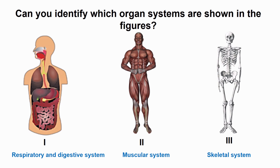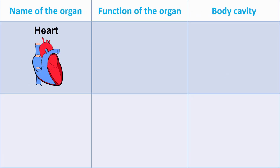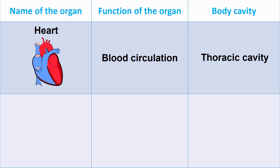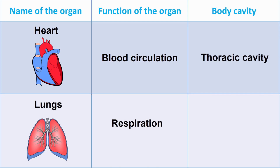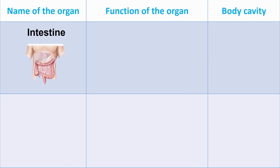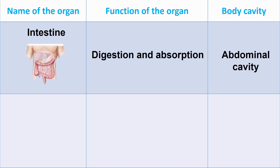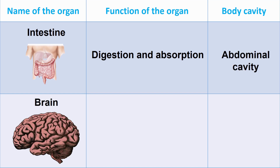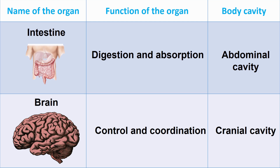With the help of that, can you complete the following table? The function of the heart is blood circulation, and it is located in the thoracic cavity. The function of the lungs is respiration, also located in the thoracic cavity. The function of the intestine is digestion and absorption of food, located in the abdominal cavity. The function of the brain is to control and coordinate the body, and it is located in the cranial cavity. As we have seen, various organs are safe within the body cavity. Hence, the human skeleton is a protective shell for all the internal organs.